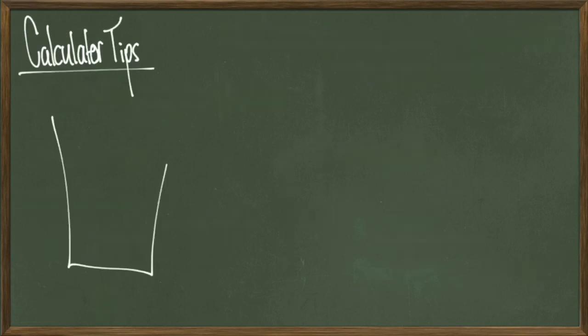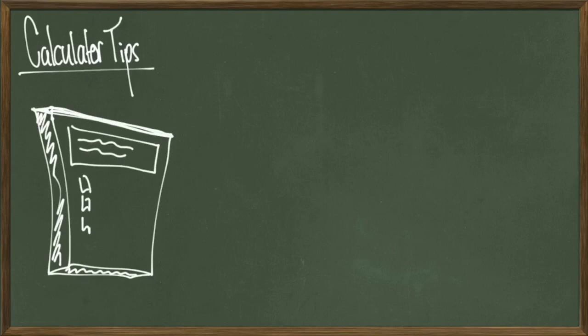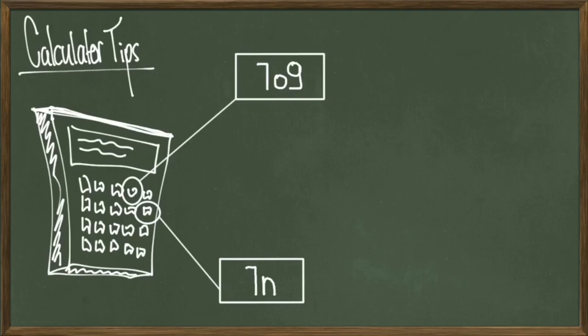Before we go into some actual examples, I want to talk about some calculator tips. When using a calculator, you'll see buttons like log and ln, and if it's a scientific calculator and not necessarily a programming calculator, you can't input actual logs. It'll always be a log of base 10 or a natural log. So if I need to calculate logs with bases that are not 10 or are not e, the question is how do I do that with this kind of calculator?